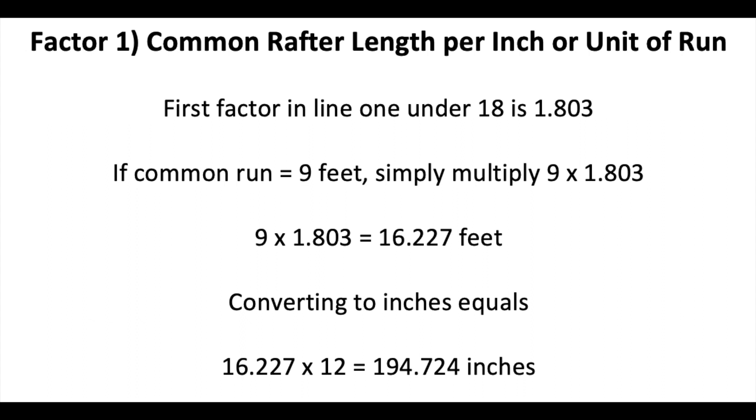Example, assume we have a rafter run of 9 feet and the given pitch is 18 over 12. We have 9 times 1.803 equals 16.227 feet. Multiplying this by 12 will convert the results to inches, 16.227 times 12 is equal to 194.72 inches.